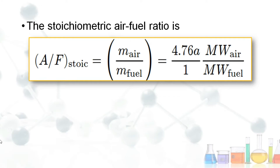The mass of air can be defined as 4.76 × A, where A is found from the general equation, multiplied by the molecular weight of air (MW_air) and divided by the molecular weight of fuel (MW_fuel).